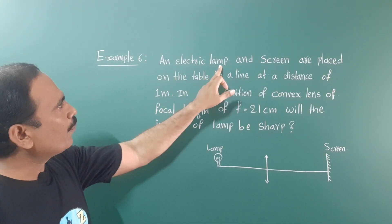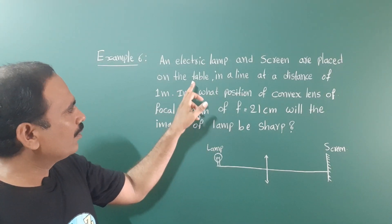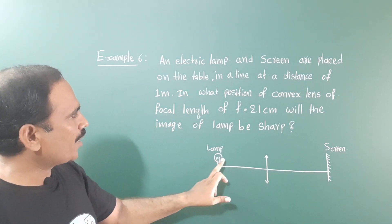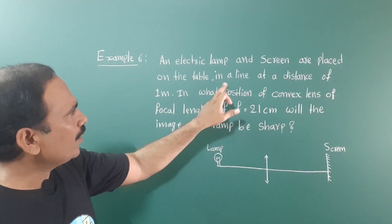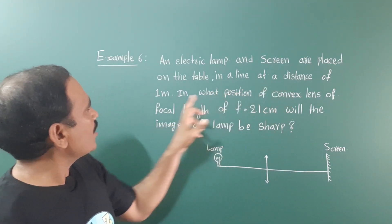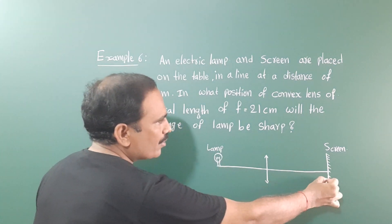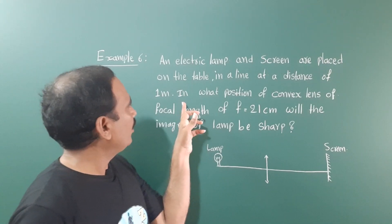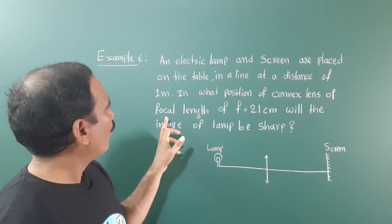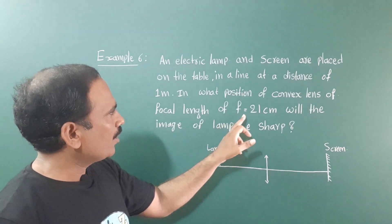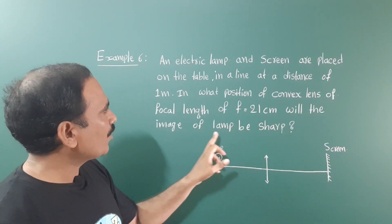An electric lamp and a screen are placed on a table in a line at a distance of 1 meter. So the lamp-to-screen distance is 1 meter. In what position of a convex lens of focal length f equal to 21 centimeters will the image of the lamp be sharp?